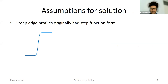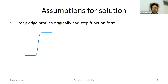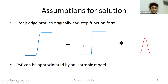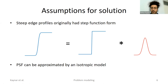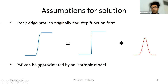Our first assumption is that if we observe a steep edge profile in the image, we assume it originally had a step function form that was convolved with a blur kernel. Another assumption is that the point spread function can be approximated by an isotropic model. For diffraction-limited systems, the PSF is isotropic in the central region — around the borders it can be slightly non-isotropic, but centrally it is completely isotropic. So we assume we can approximate the PSF with this isotropic model.